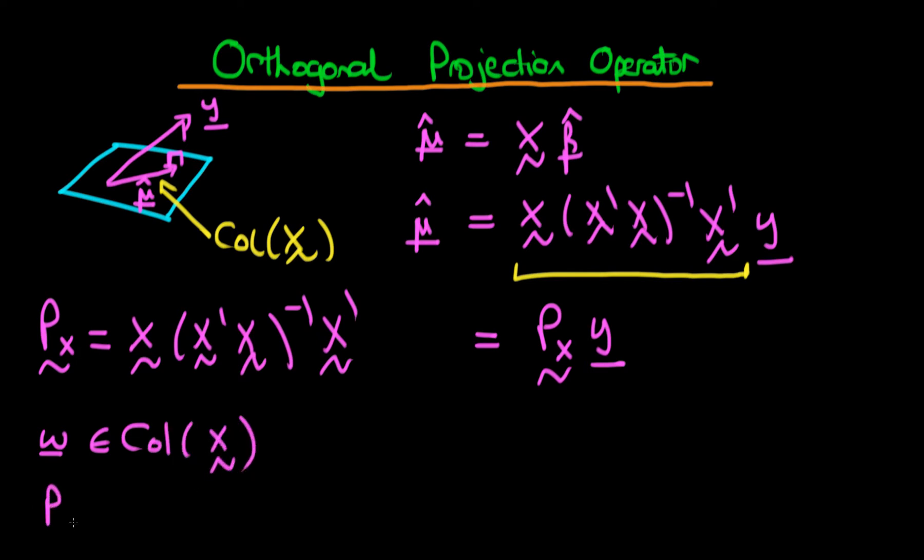Then if we apply the projection operator to that vector w, then we should just get that original vector w out in the first place because the projection of a vector which already lies in the column space is just going to be itself. You can't get any better projection than that.